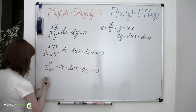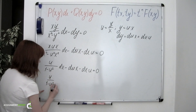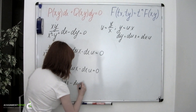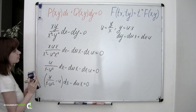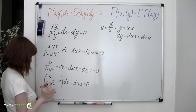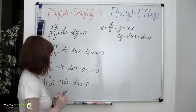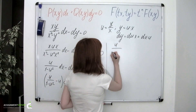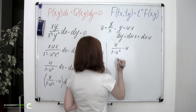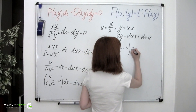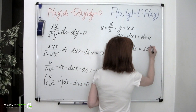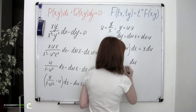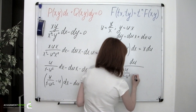We factor out dx and obtain: u over 1 minus u squared minus u, times dx minus du times x equals 0. This is an equation with separable variables, so it becomes: u over 1 minus u squared minus u dx equals x du, and then dx over x equals du over u over 1 minus u squared minus u.